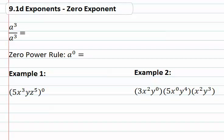But to set up the exponent of zero, I first want to look at a cubed over a cubed. Now a cubed in the numerator we know means a times a times a, and a cubed in the denominator we know means a times a times a.